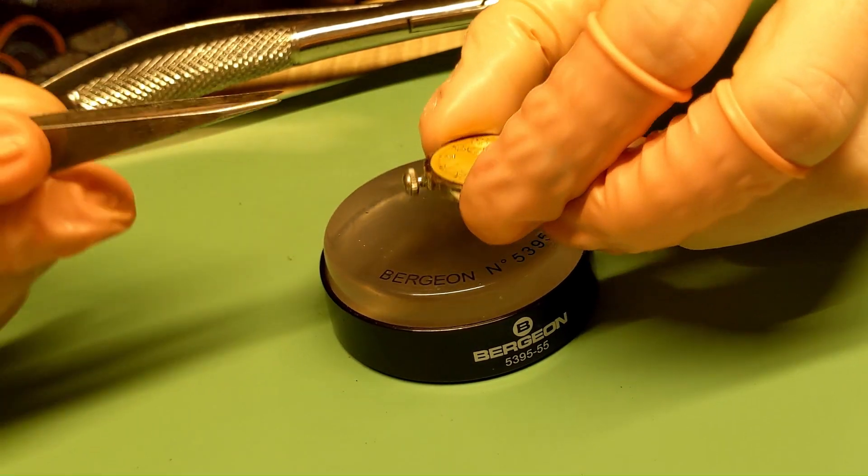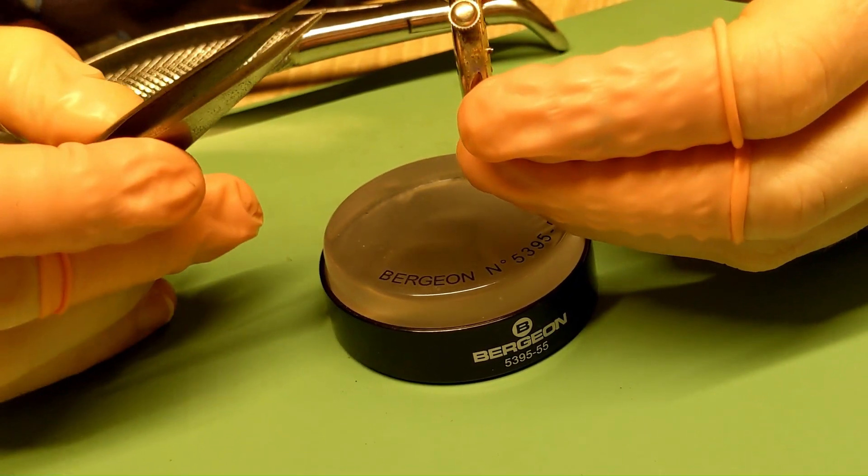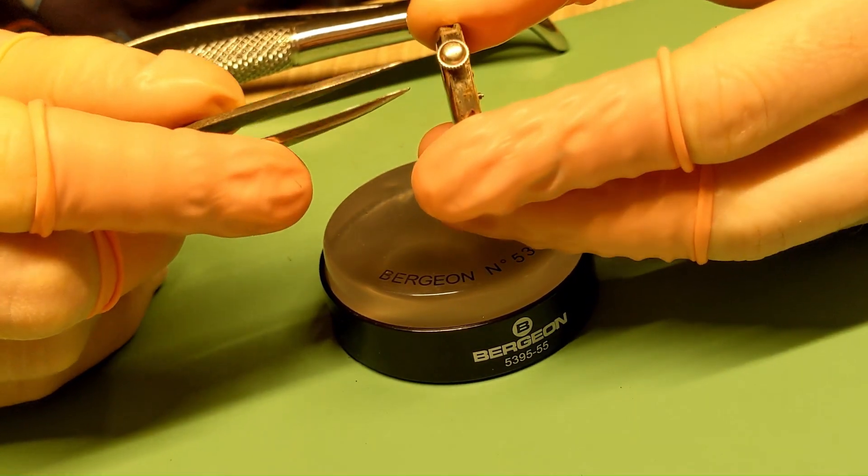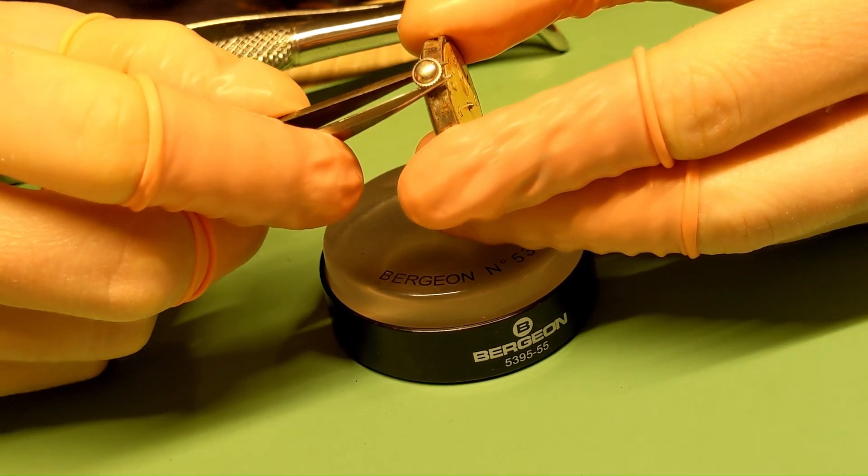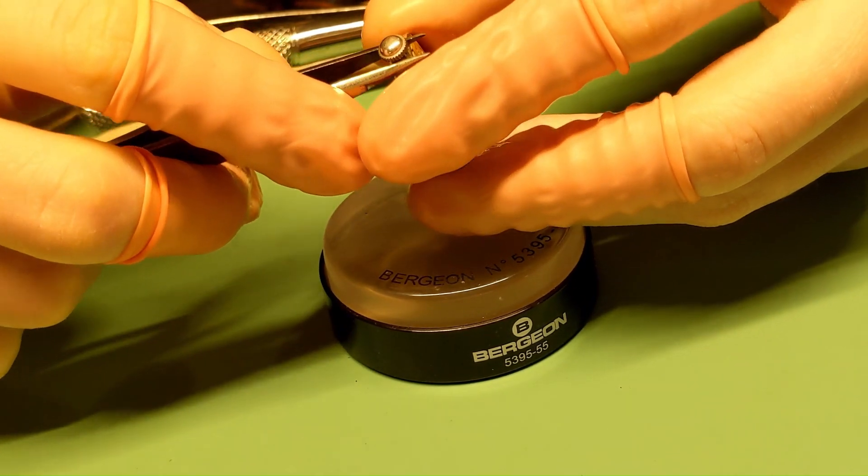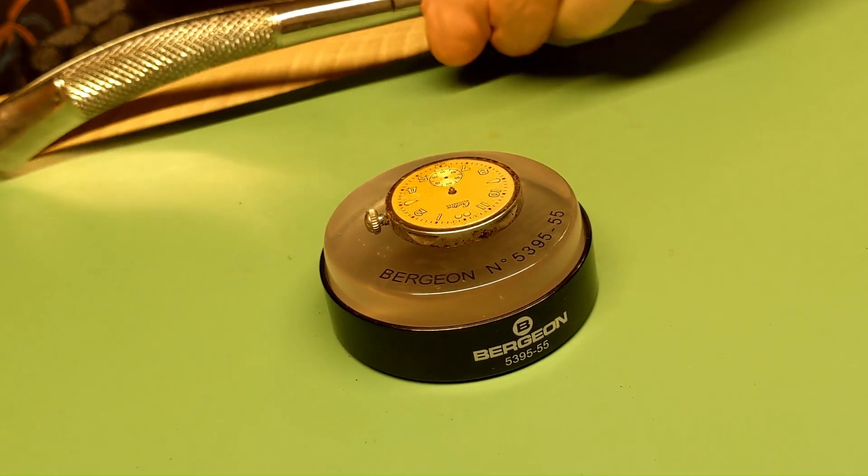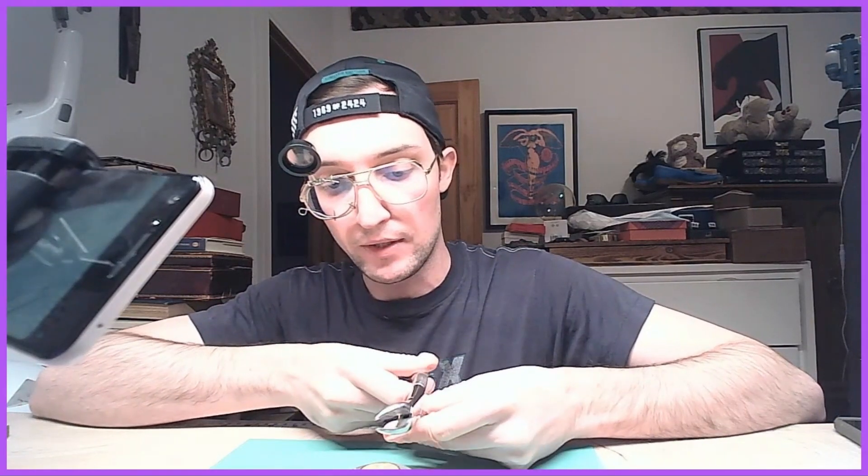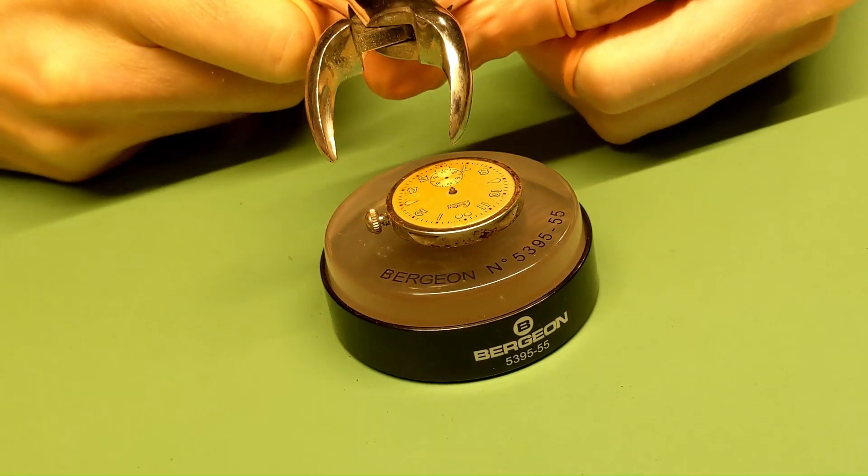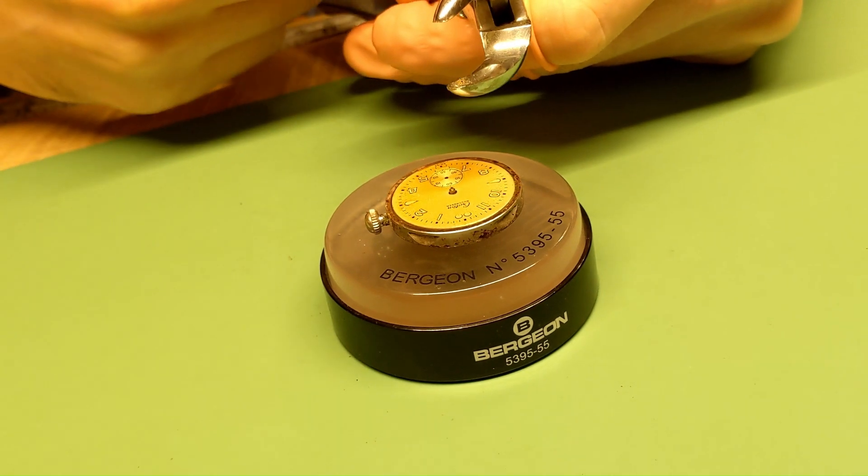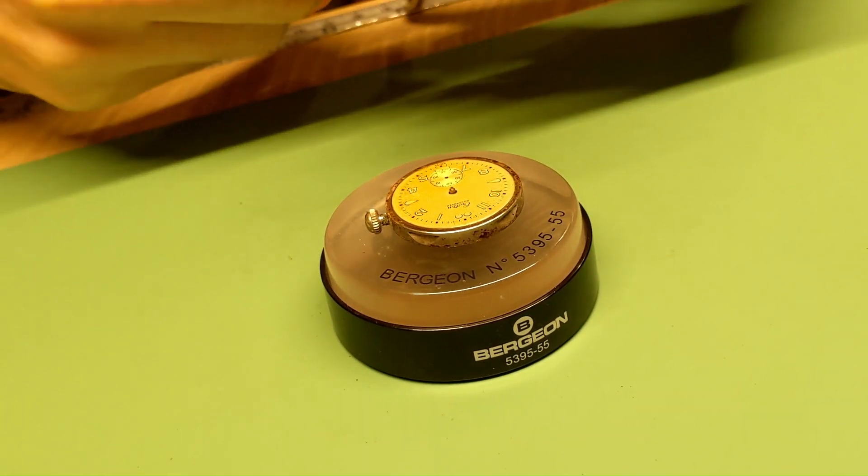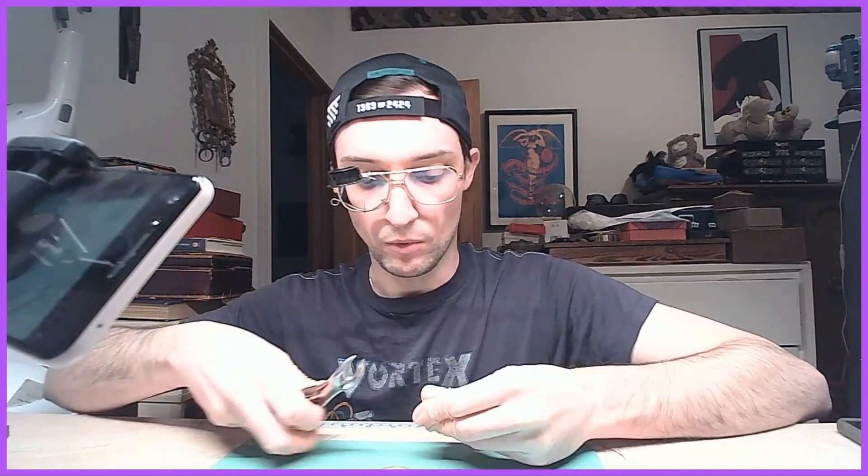One method to get this off is you could pry it with tweezers. You have to be really careful not to bend it in any way. I don't really like to use tweezers because I happen to have this tool. It's actually a dental tool, I don't really know what it's called, but it's got these kind of grooved bits here. I'm sure there's a Bergeon tool specifically for this.